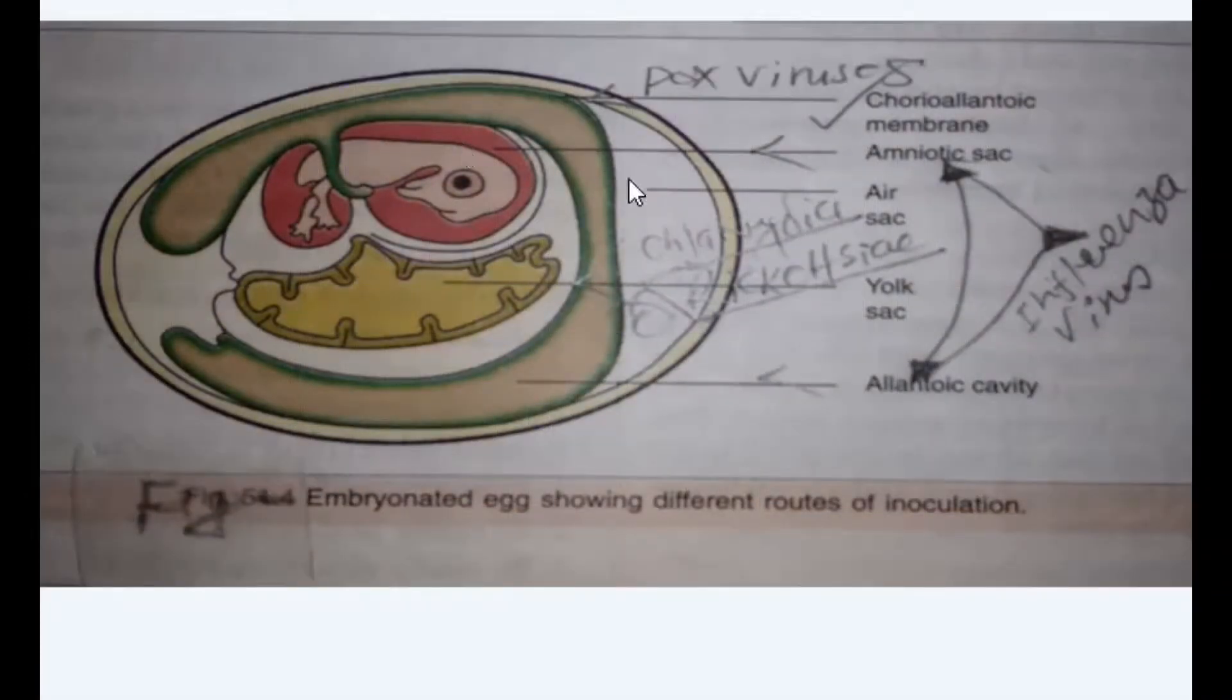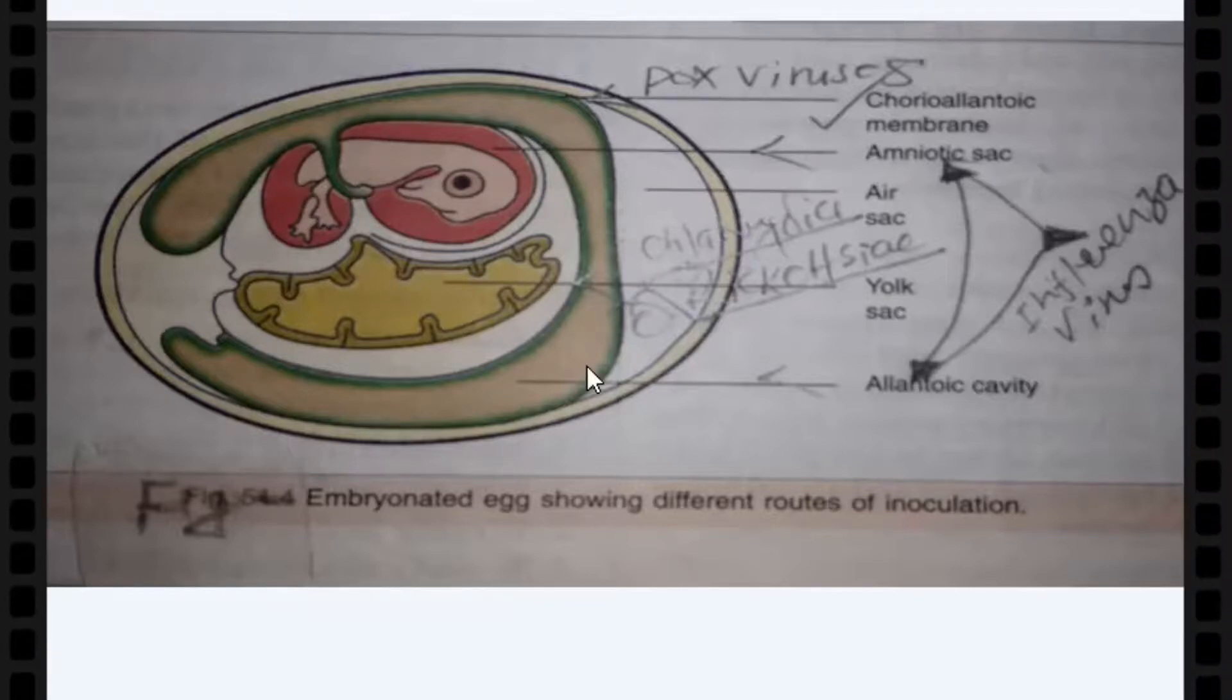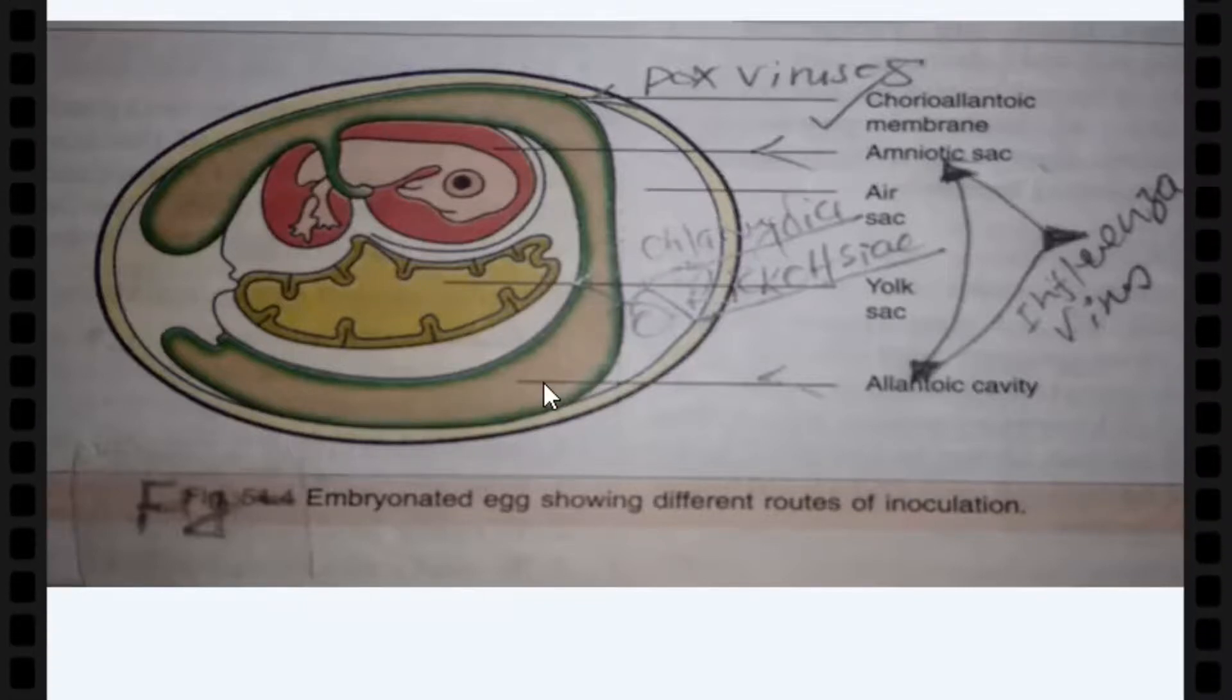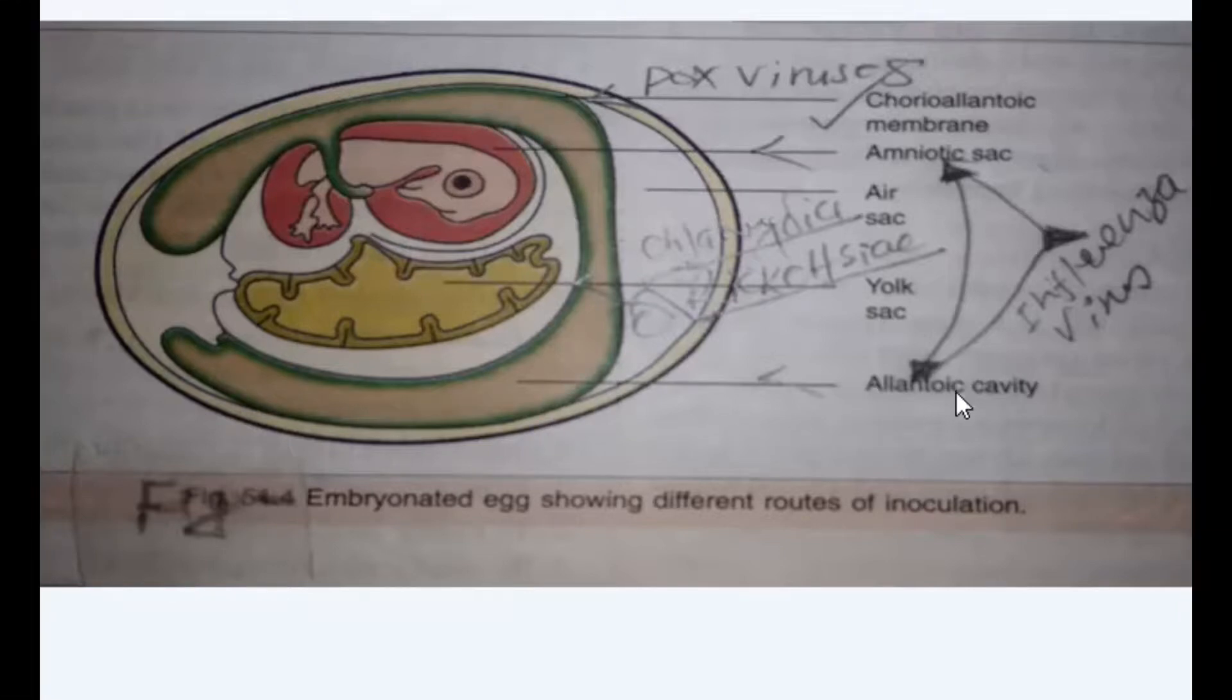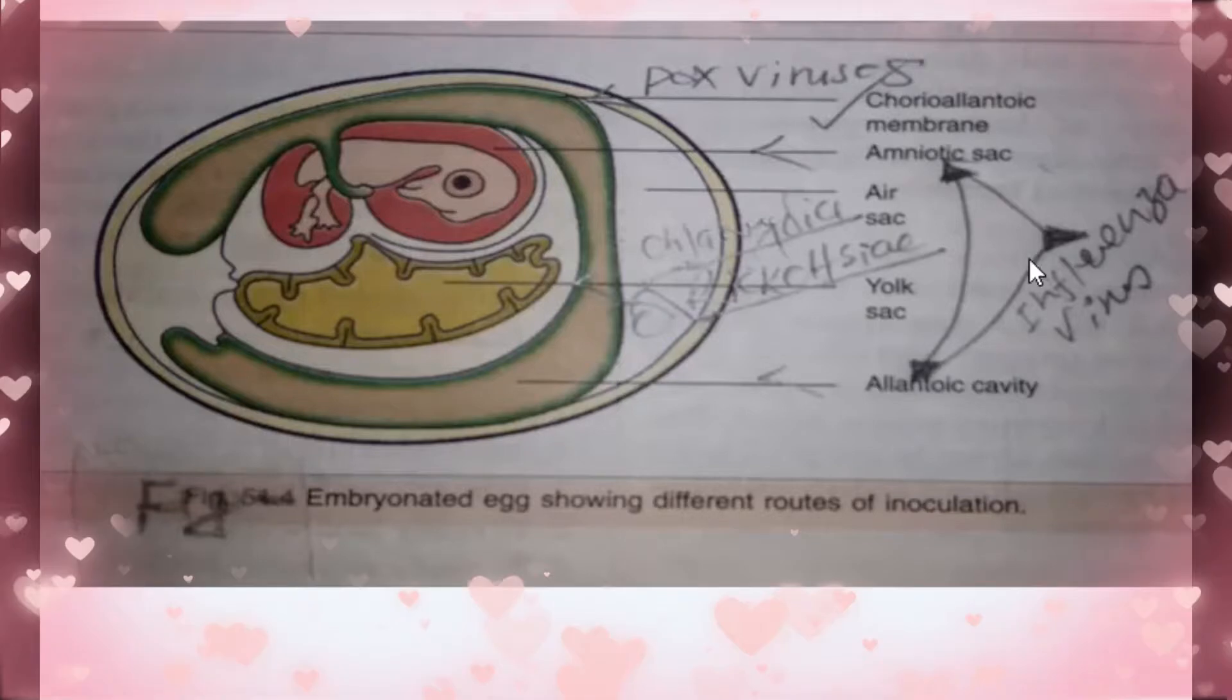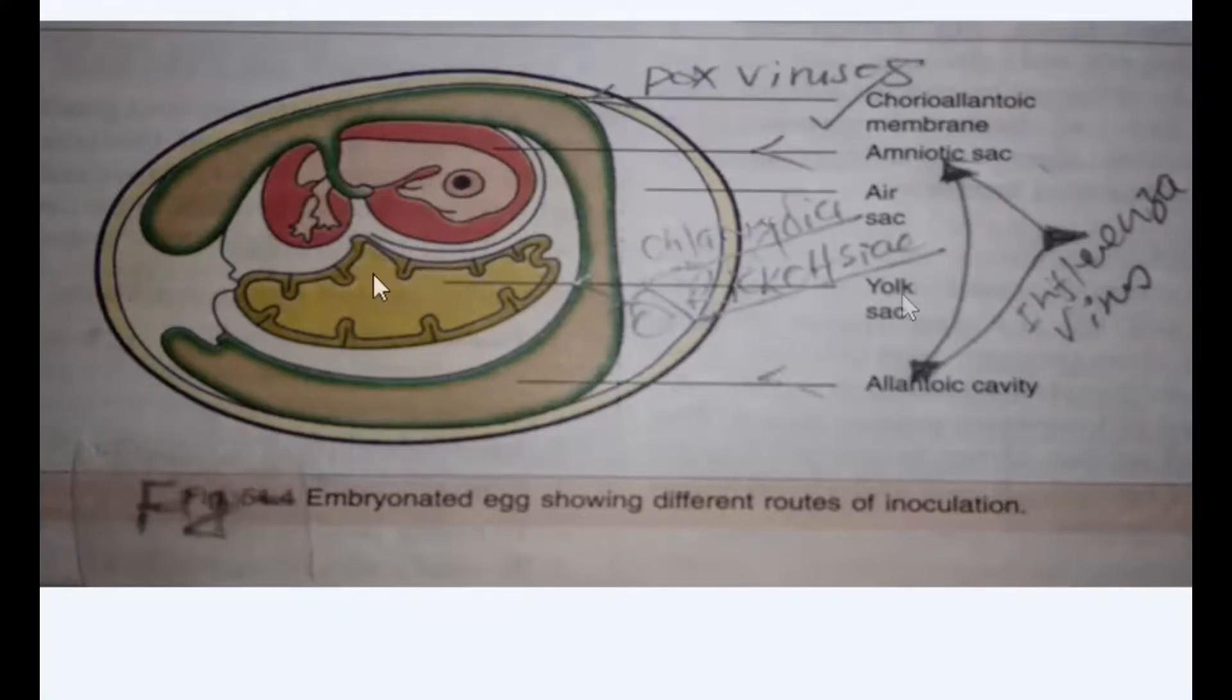Similarly, the amniotic sac, this one is the amniotic sac. Here you can see this one, and this one is the allantoic cavity. These two sites for influenza virus. Now remaining, this yolk sac for Chlamydia and Rickettsia bacteria.